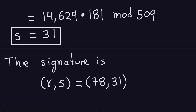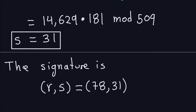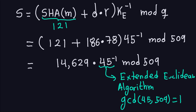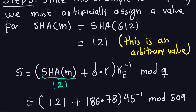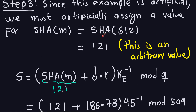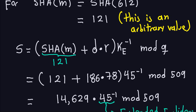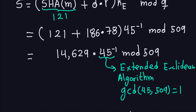Again, this is an artificial example — not something you would actually do in real life. In particular, the hash function result was made up; in reality the SHA hash function produces a 160-bit output, not a small number like 121.